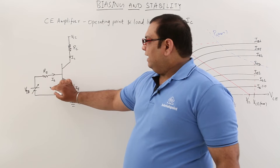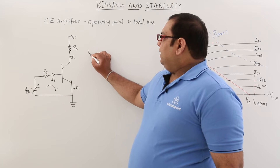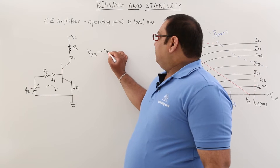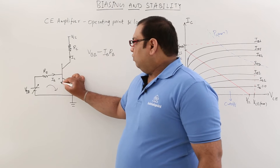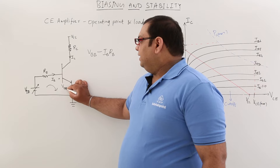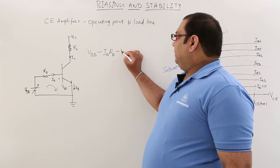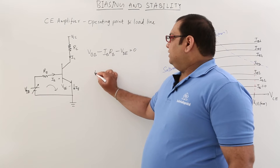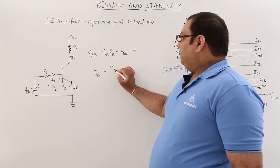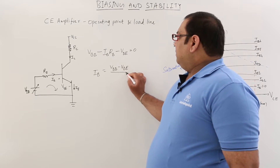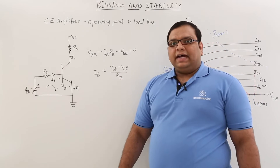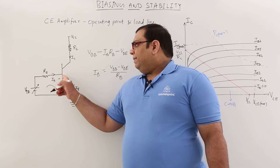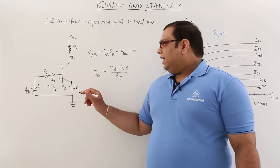First, let us analyze the circuit. Taking the input loop KVL equation: VBB minus IB times RB minus VBE equals 0. From this, IB equals (VBB minus VBE) divided by RB. This is how we find the IB value. VBB is the supply voltage we are applying, and VBE is a constant voltage when the junction is forward biased.